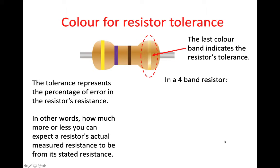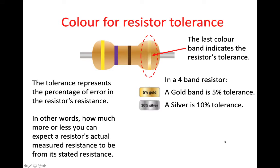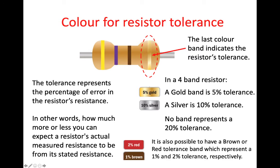In a four-band resistor, if it's a gold band, that represents a 5% tolerance. If it's a silver band, it represents a 10% tolerance. And if there's no band, that represents a 20% tolerance. It is also possible to have a brown or red tolerance band, which represents a 1% and 2% tolerance respectively.